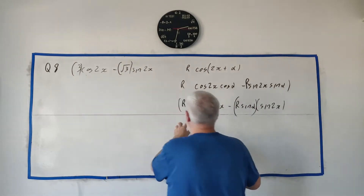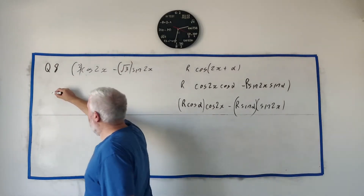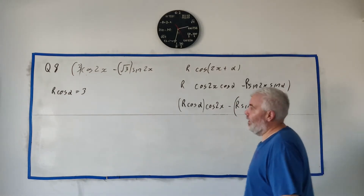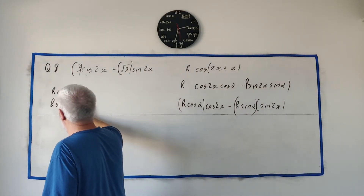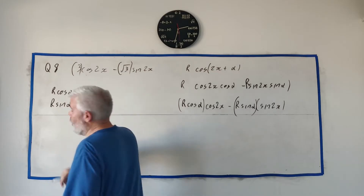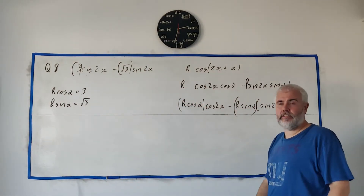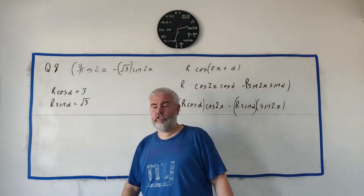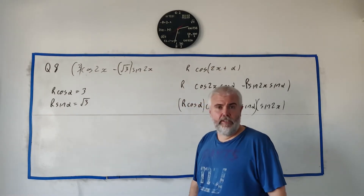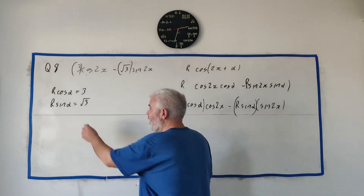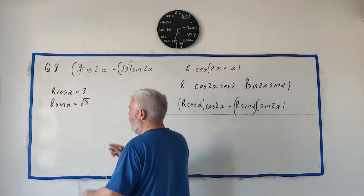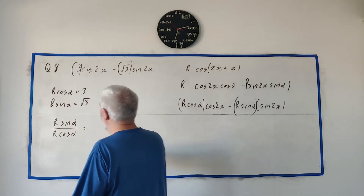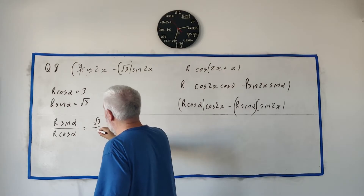So I can say r·cosine(α) must equal 3, and r·sine(α) must equal √3. This is a common approach — we have two equations and two unknowns, so we just solve for r and α. The easier one to solve for first is α: if we divide the second equation by the first, we get r·sine(α) divided by r·cosine(α) equals √3 divided by 3.